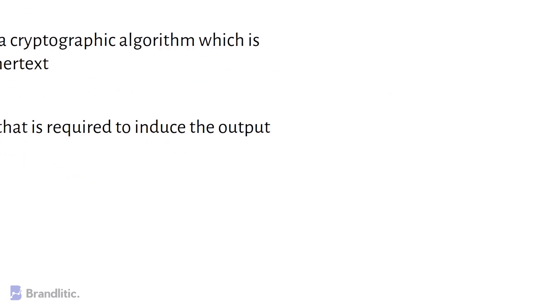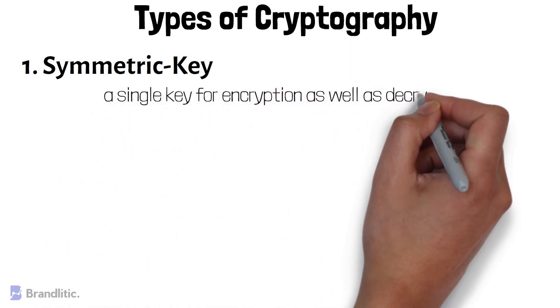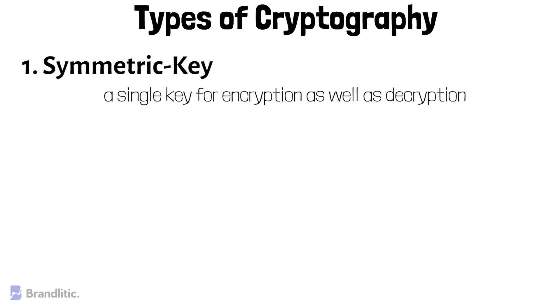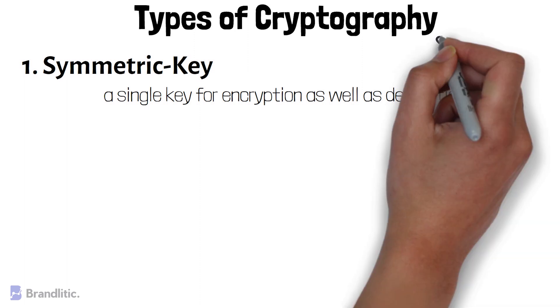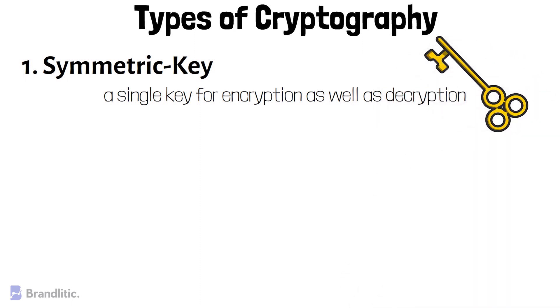Let's discuss the types of cryptography. There are mainly three different ways to perform cryptographic algorithms. First, Symmetric Key Cryptography. In this encryption method, we use a single key for both the encryption and the decryption process. But using a common single key creates a problem of securely transferring the data between the sender and the receiver, and that's why it is also called secret key cryptography.